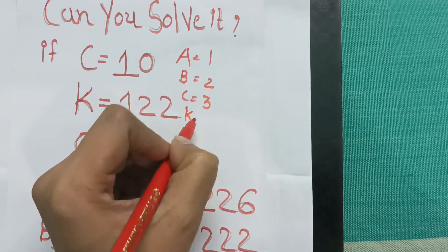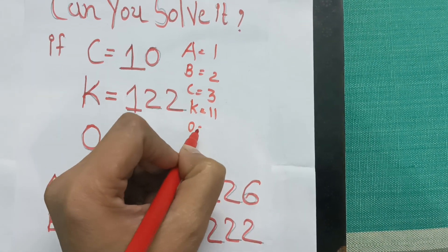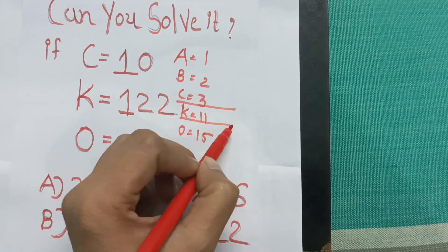And K's alphabetical order is 11, and O's is 15. Now you can see that what is the relation between 3 and 10.